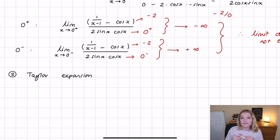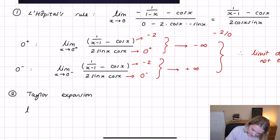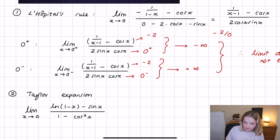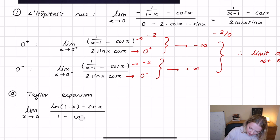The Taylor expansion approach takes the limit we have and substitutes in the equivalent Taylor expansion for the different terms. Writing the limit again as x tends towards zero of natural log of one minus x, minus sine x — one thing to note is that one minus cosine squared x is the same as sine squared x, by the identity sine squared plus cosine squared equals one. So we can rewrite the denominator as sine squared x.